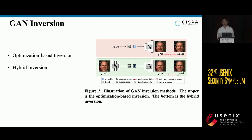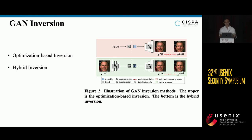We consider two representative and most widely used techniques of GAN inversion: optimization-based and hybrid formulation. Optimization-based inversion typically reconstructs a target image by optimizing the latent vector — starting from a Gaussian initialization, we search for an optimized latent code to minimize the reconstruction loss, which measures the similarity between a given image and the image generated from the searched latent code. For hybrid inversion, researchers proposed using an encoder to provide a better initialized latent code, first predicting a latent code from a given image via a separate encoder, then using it as initialization for the optimization-based inversion.